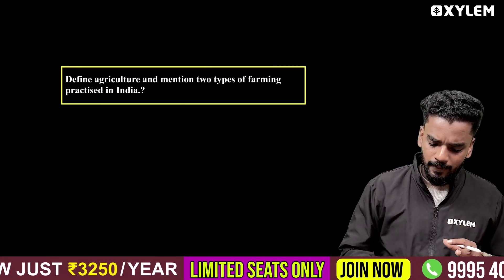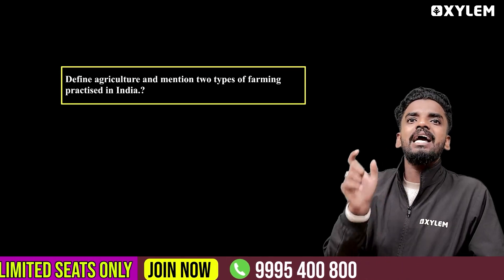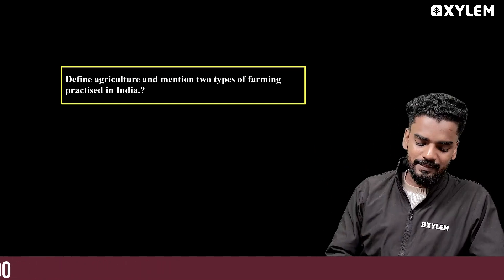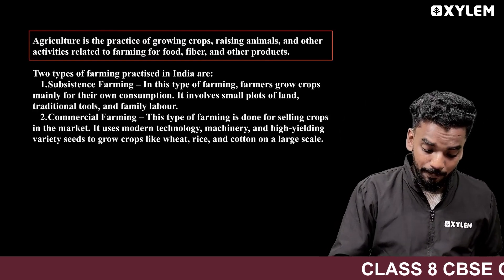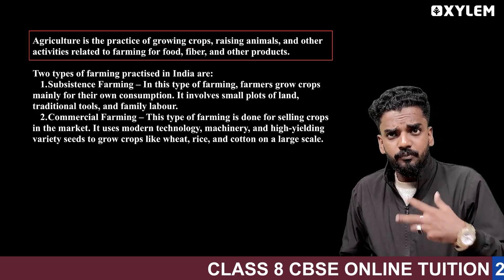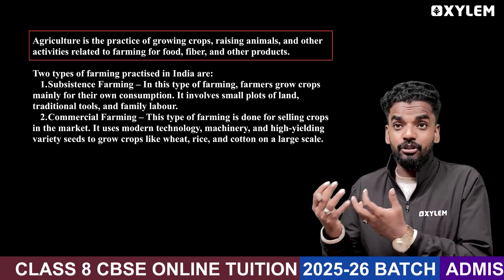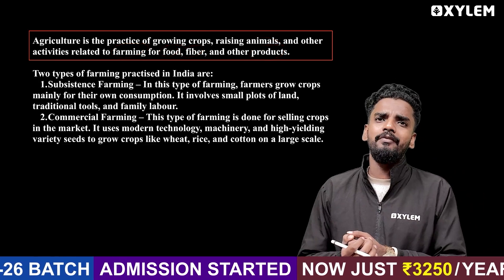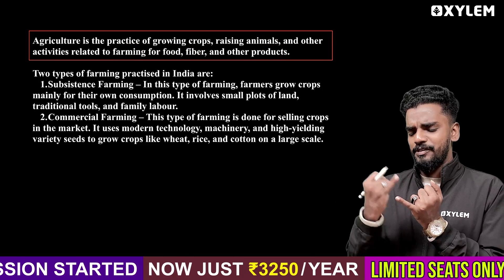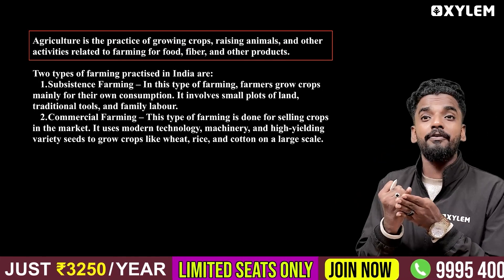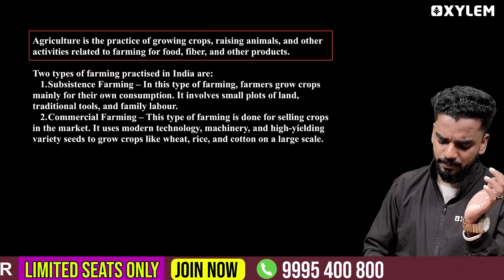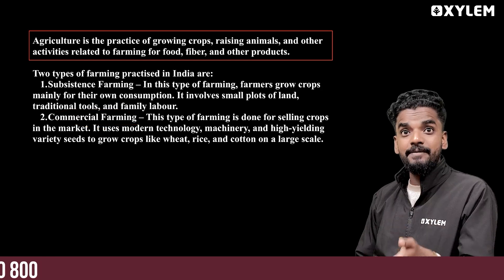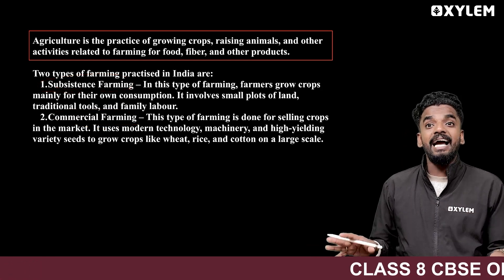Now we have a detailed question: define agriculture and mention two types of farming practices in India. Agriculture is the practice of growing crops, rearing animals, and other activities related to farming for food, fiber, and other products. Types include subsistence farming, intensive farming, commercial farming, and plantation farming.